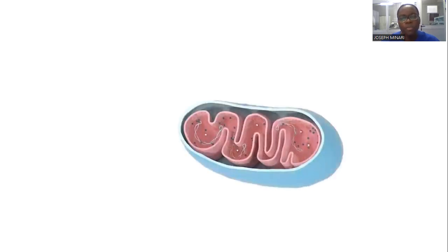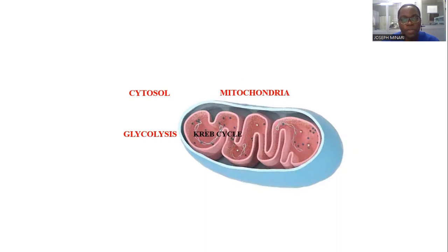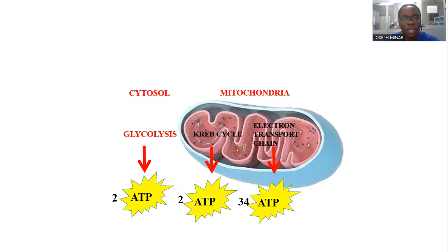ATP is produced in the mitochondria and also in the cytosol. The process starts from the cytosol through glycolysis, then moves to the Krebs cycle, and then to the electron transport chain. We have production of 2 ATP from glycolysis in the cytosol, 2 from the Krebs cycle in the mitochondria, and then from the electron transport chain we have 34, totaling 38 adenosine triphosphate — the currency of the cell.